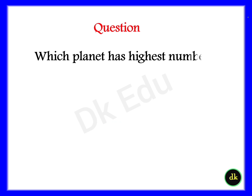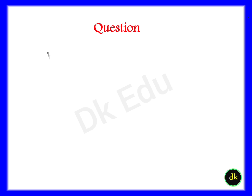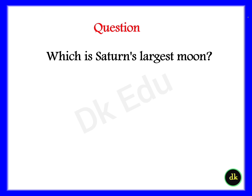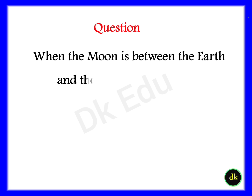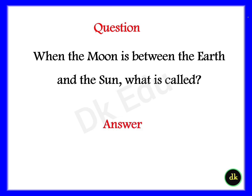Question: Which planet has the highest number of moons? Answer: Saturn. Question: What is Saturn's largest moon? Answer: Titan. Question: When the moon is between the Earth and the Sun, what is it called? Answer: Solar Eclipse.